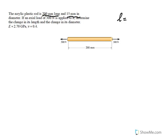So the length is given to be 200 millimeters, and the initial diameter is 15 millimeters. If an axial load of 300 Newton is applied to it, we want to determine the change in its length. That would be really easy. So we want to find delta L, and also change in diameter, delta D.